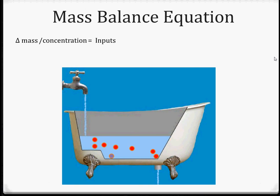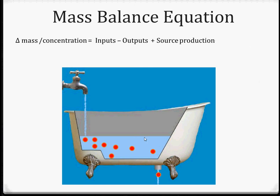Here is our mass balance equation again, thinking about the system as the concentration or amount of mass of a pollutant in a bathtub. We have inputs — things coming in through the faucet — and outputs, things going out through the drain. We can have internal source production, such as a chemical reaction (represented by a purple dot turning orange). And we can have sink elimination — a fish coming in and absorbing a chemical, or again, a phase change such as vaporizing or turning into a solid.